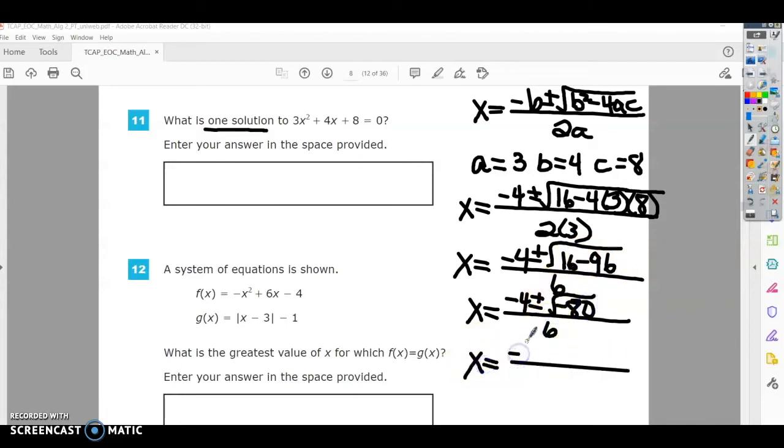All right, so negative 4 plus or minus. I'm going to simplify 80. I need a perfect square, because when I have a square root, if I have a perfect square, it comes out. All right, 80 is not a perfect square, but I know that 16 is, and 16 times 5 is 80.